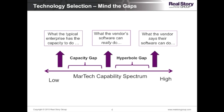Even if you don't take anything else out of this webinar, I hope you keep this framework in mind, which I'm calling the mind-the-gap model of technology selection. The marketing technology marketplace is very rapidly evolving, which is good news for digital marketers because you now have new opportunities to do things you probably were not able to do earlier.